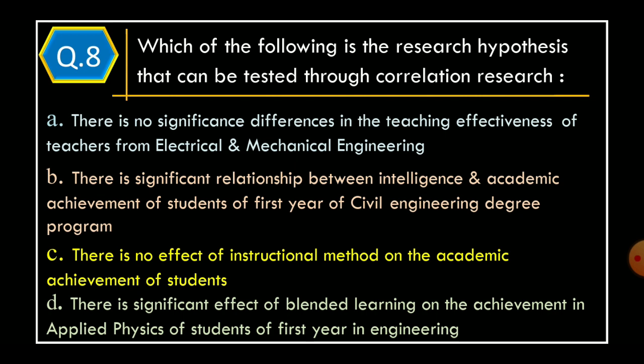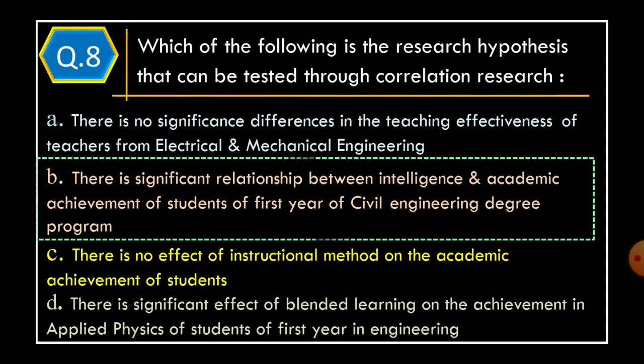Question 8. Which of the following is a research hypothesis that can be tested through correlation research? Option A: There is no significant difference in the teaching effectiveness of teachers from electrical and mechanical engineering. Option B: There is a significant relationship between intelligence and academic achievement of students of the first year of civil engineering degree program. Option C: There is no effect of instructional method on the academic achievement of students. Option D: There is a significant effect of blended learning on the achievement in applied physics of first year engineering students. The correct option is Option B, there is a significant relationship between intelligence and academic achievement of students of the first year of civil engineering degree program.